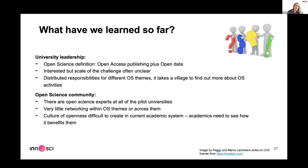What have we learned so far? University leadership's understanding of open science seems limited mostly to open access publishing and perhaps open data. There is huge interest from university leadership, but the scale of the challenge is often unclear. Responsibilities are distributed across institutions for different open science themes — it really takes a village for large universities. Interestingly, there are open science communities at all of the universities, but leadership often doesn't even know about them. There's very little networking within or across open science themes, and creating a culture of openness is really difficult in the current academic system.